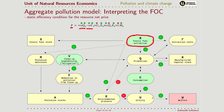The marginal increase in environmental pressure causes a marginal reduction in utility, so you have to add those terms. We also saw that environmental pressure has an effect on production, so we have the marginal environmental pressure times marginal production times the shadow price of capital. Finally, you must also add the marginal increase in the pollution stock, evaluated at the shadow price of the pollution stock.